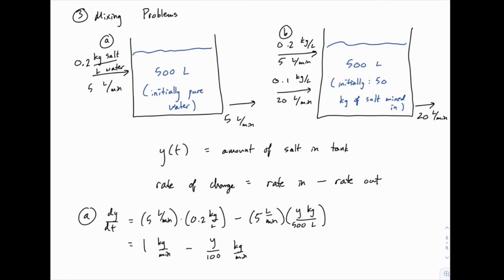That's probably the hardest part to understand when starting these problems — building the differential equation. But if you remember rate in minus rate out, and each rate is simply the concentration of salt times the flow rate, you have it. The flow rates are given, the concentration coming in is given, and the concentration going out is always the amount of salt in the tank divided by the amount of water in the tank.